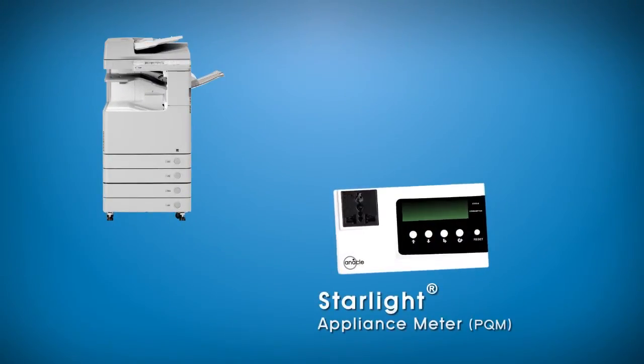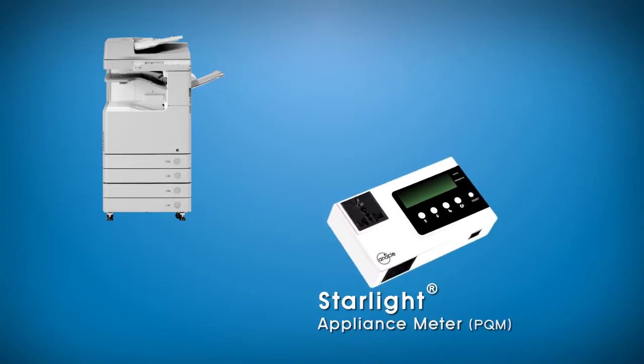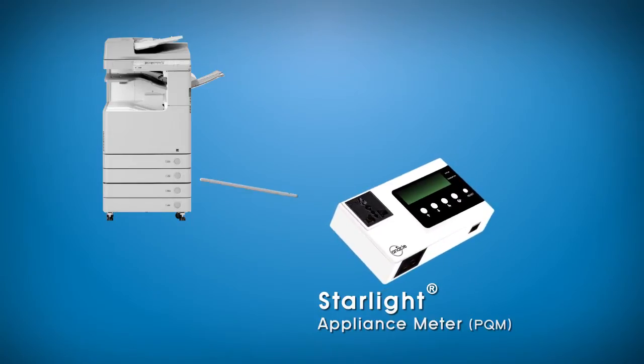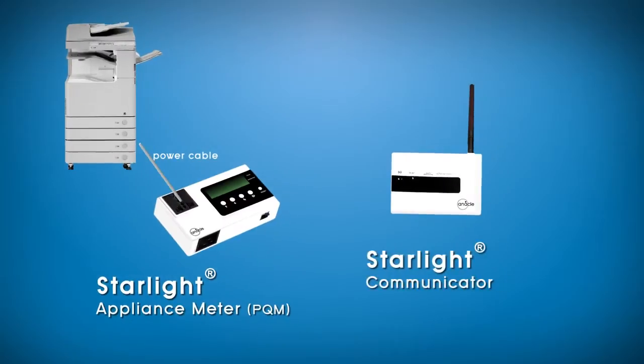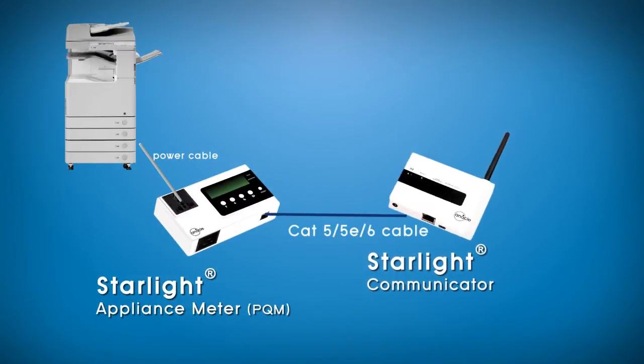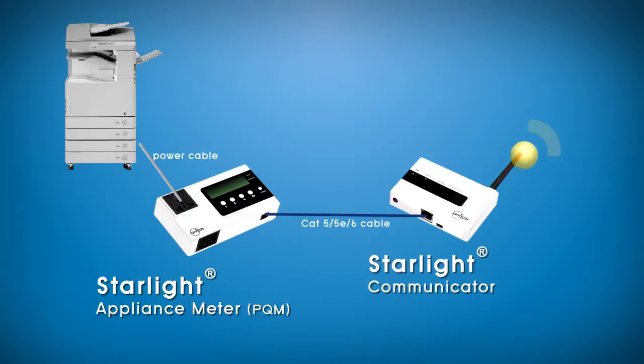Starlight Appliance Meter measures energy consumption of office or home appliances. Simply connect the power plug of the appliance directly to the universal socket of the Starlight Appliance Meter. Next, connect to the Starlight Communicator via an Ethernet cable. Starlight Communicator will then transmit the data wirelessly to the data server.